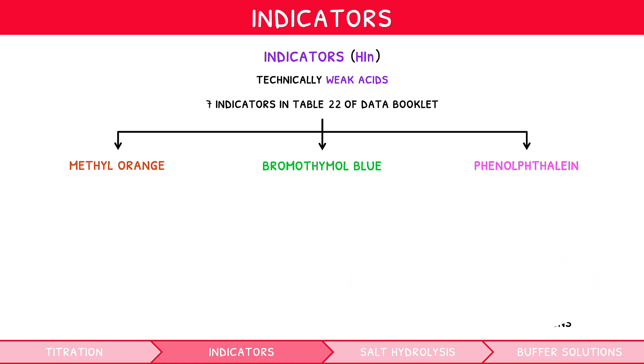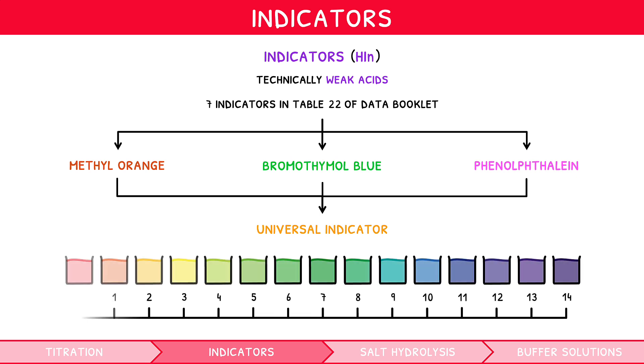There is also an indicator known as universal indicator, which contains a mixture of all three. It therefore has the capability to change color from blue to red across the whole pH spectrum, with a green color at neutralization, pH 7.